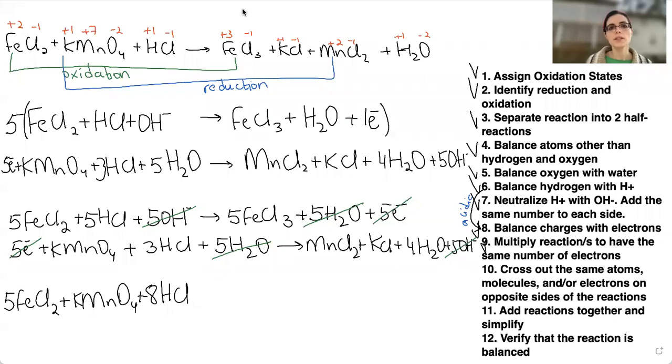So now we can actually go to the product side if we didn't forget anything. Then we get five iron three chloride plus this part, plus this part, potassium chloride, plus four H2O. Okay. So we did that together, did that, we did that.